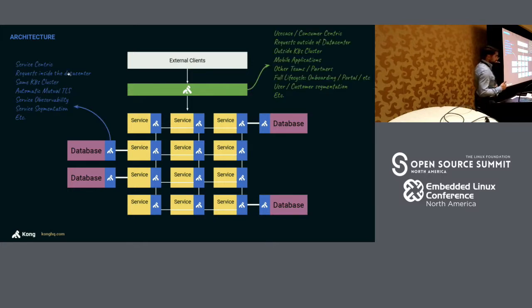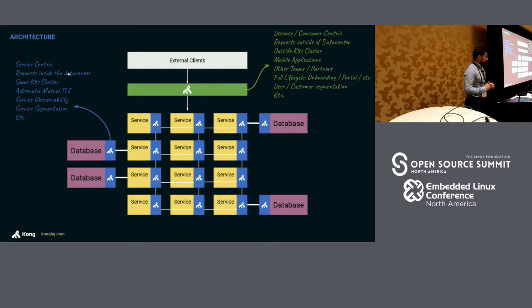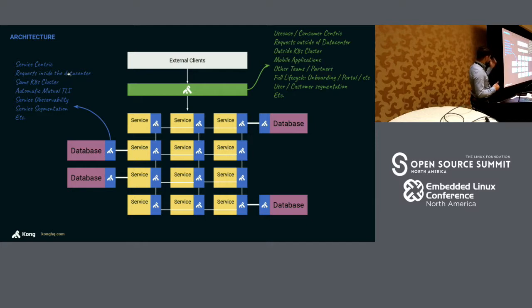Different use cases. For north-south, traditionally, it's an API gateway — a consumer-centric use case. We're managing requests that are coming outside of the data center, that can be outside of the Kubernetes cluster, from a mobile application, an iPhone app for example. Those can also be other teams within the organizations, or requests coming from other Kubernetes clusters in other clouds or other data centers, as well as partners and so on.